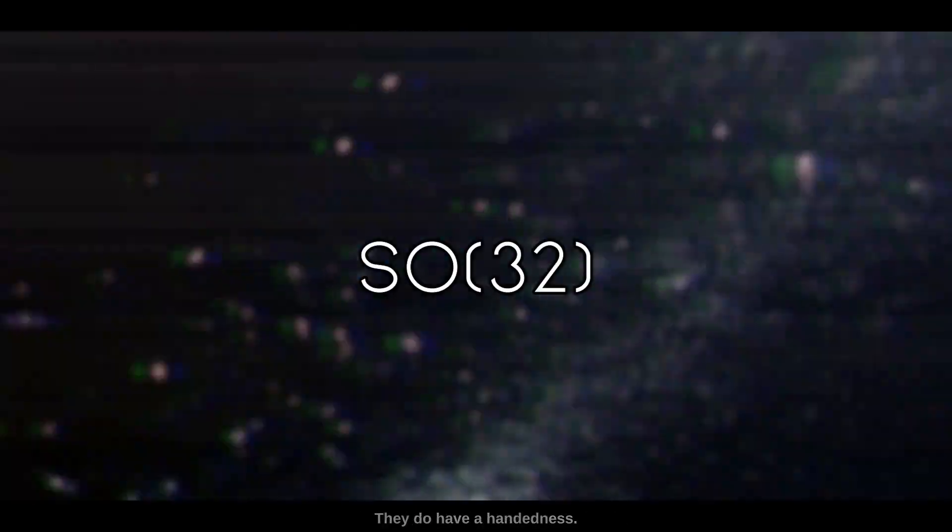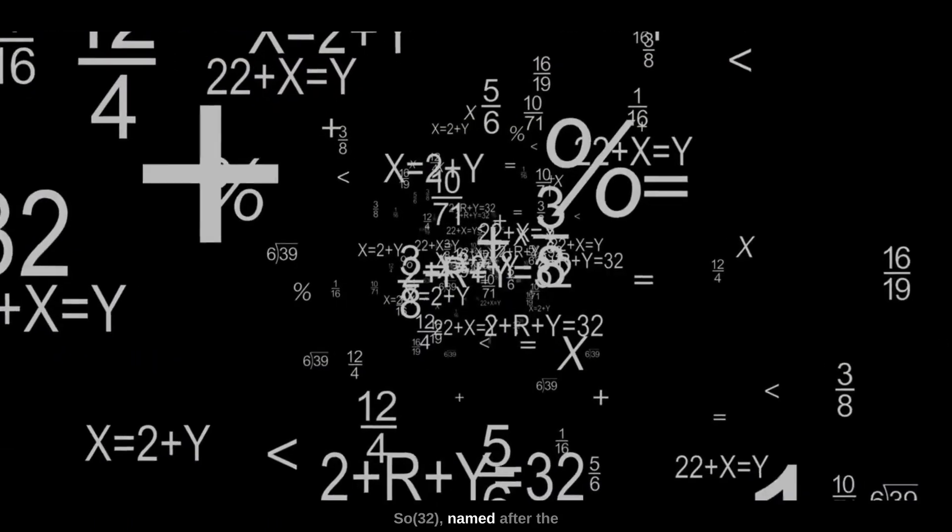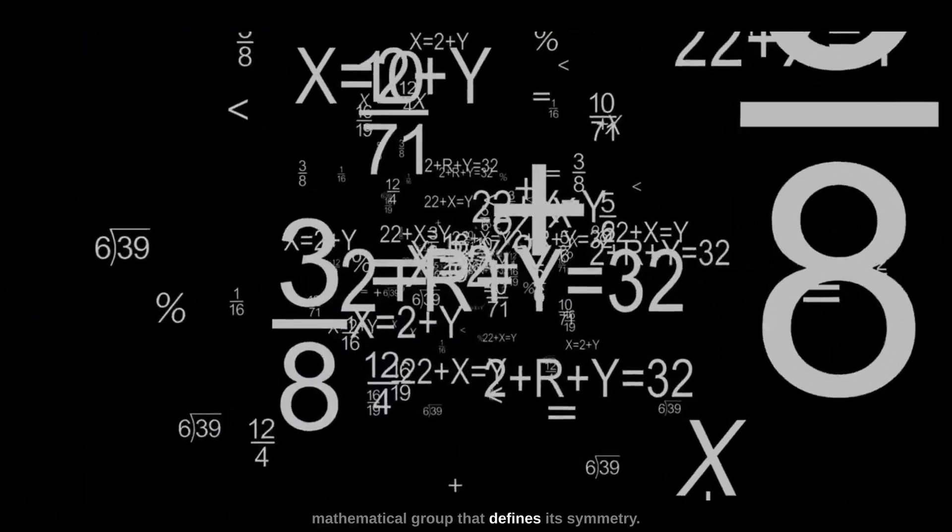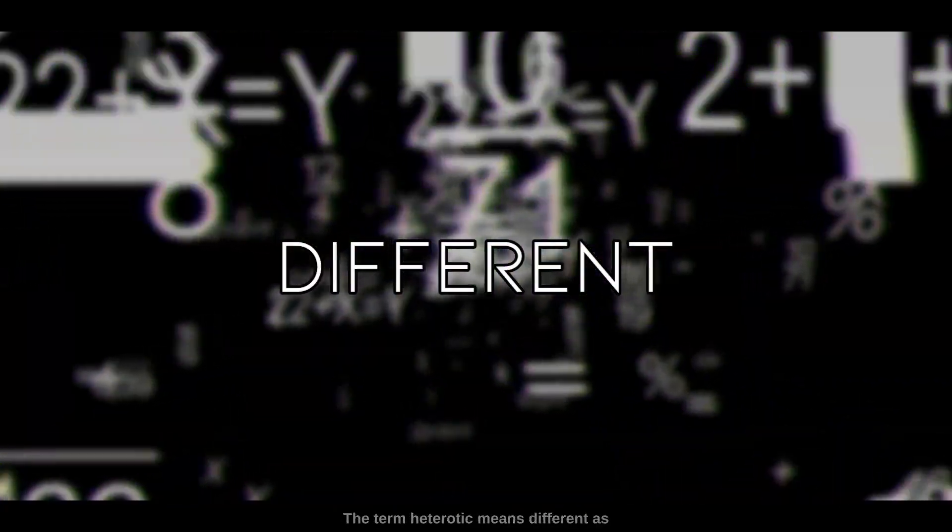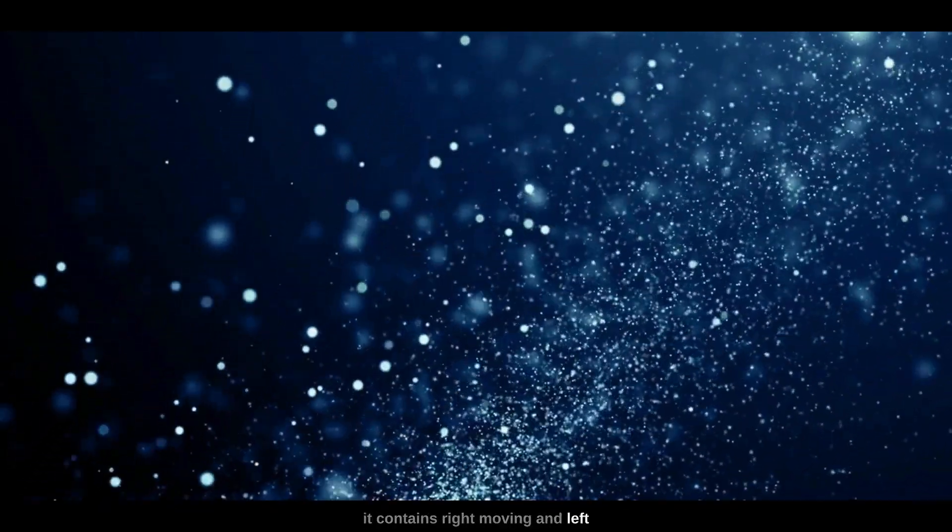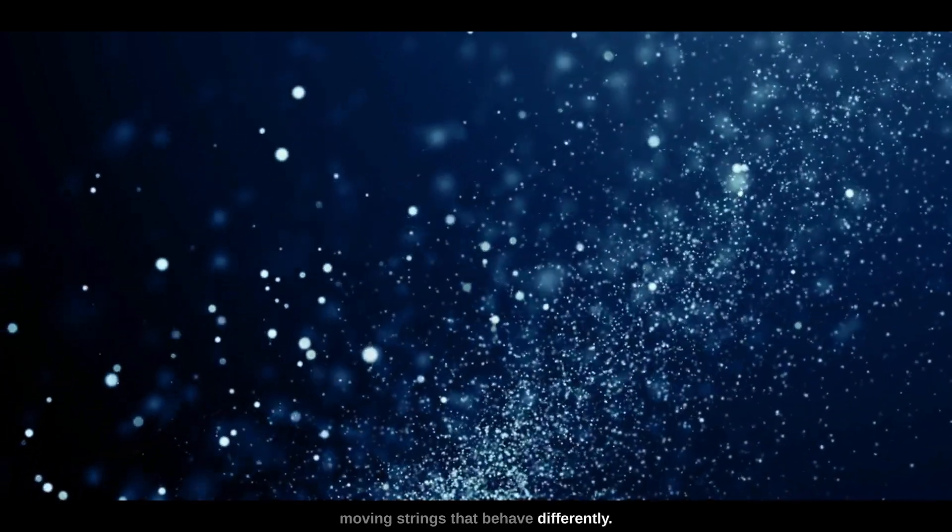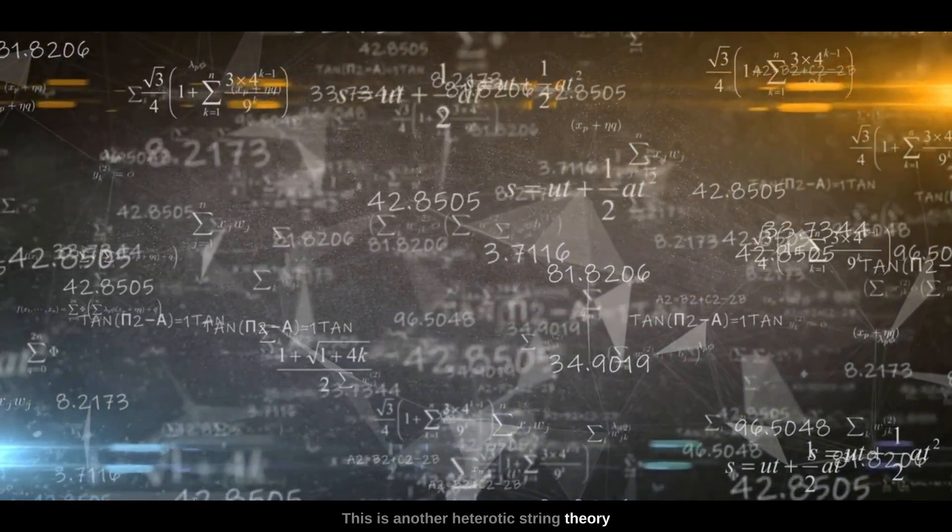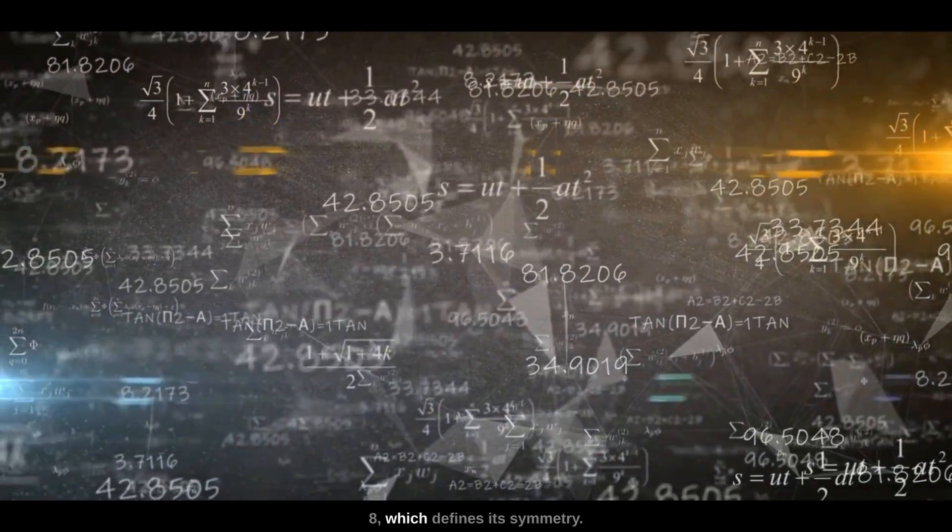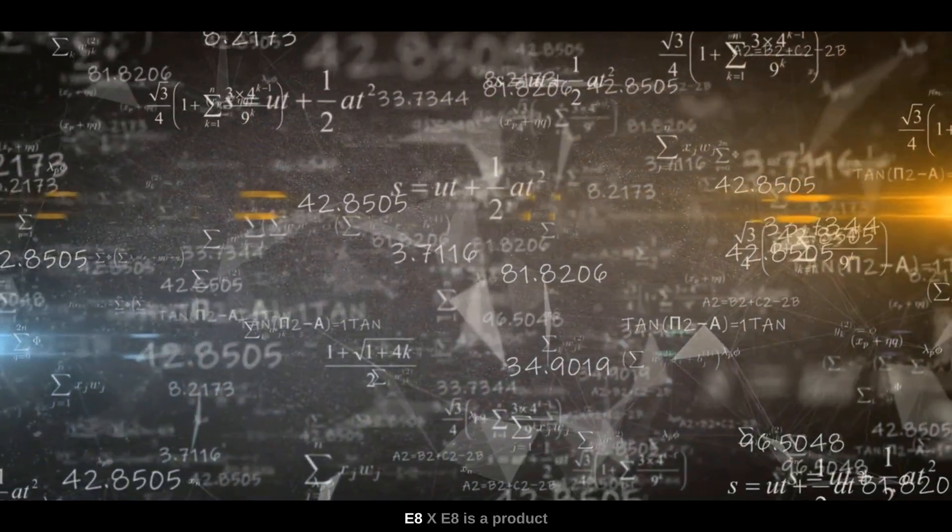SO(32): Named after the mathematical group that defines its symmetry, this is a heterotic string theory. The term heterotic means different, as it contains right-moving and left-moving strings that behave differently. E8 × E8: This is another heterotic string theory, named after the mathematical group E8 which defines its symmetry. E8 × E8 is a product of two identical E8 groups.